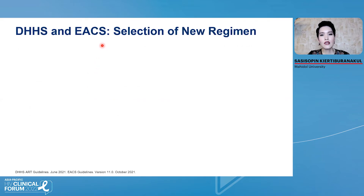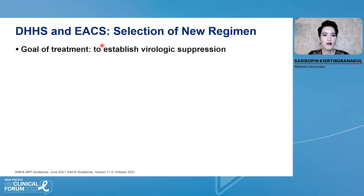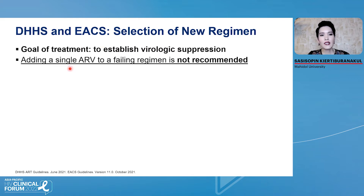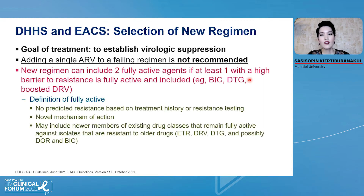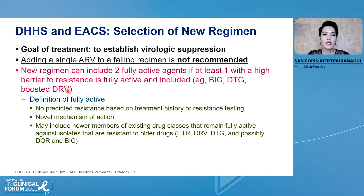How to select the new regimen? Right now, the goal of treatment for patients who have HIV virologic failure is re-suppression of the virus — to achieve viral load less than 40 or less than 50 copies. Adding a single ARV to a failing regimen is still not recommended. The new regimen can include two fully active agents if at least one with a high barrier to resistance is fully active — such as bictegravir, dolutegravir, and also boosted darunavir.